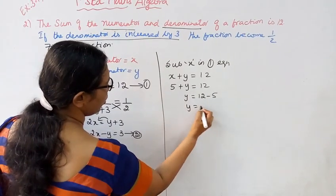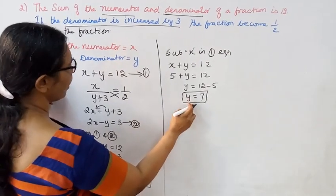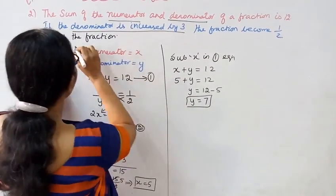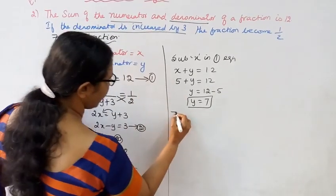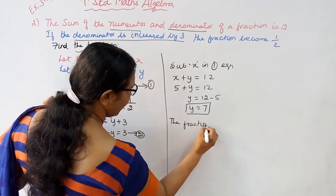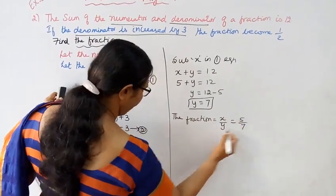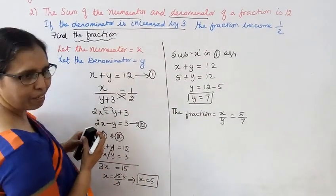y equals 7. x is 5 and y is 7. The fraction equals x by y, that is 5 by 7. The answer is 5 by 7.